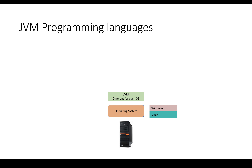Windows has its own JVM, Linux has its own JVM. JVM is the abstraction layer between the programming language and the underlying operating system.